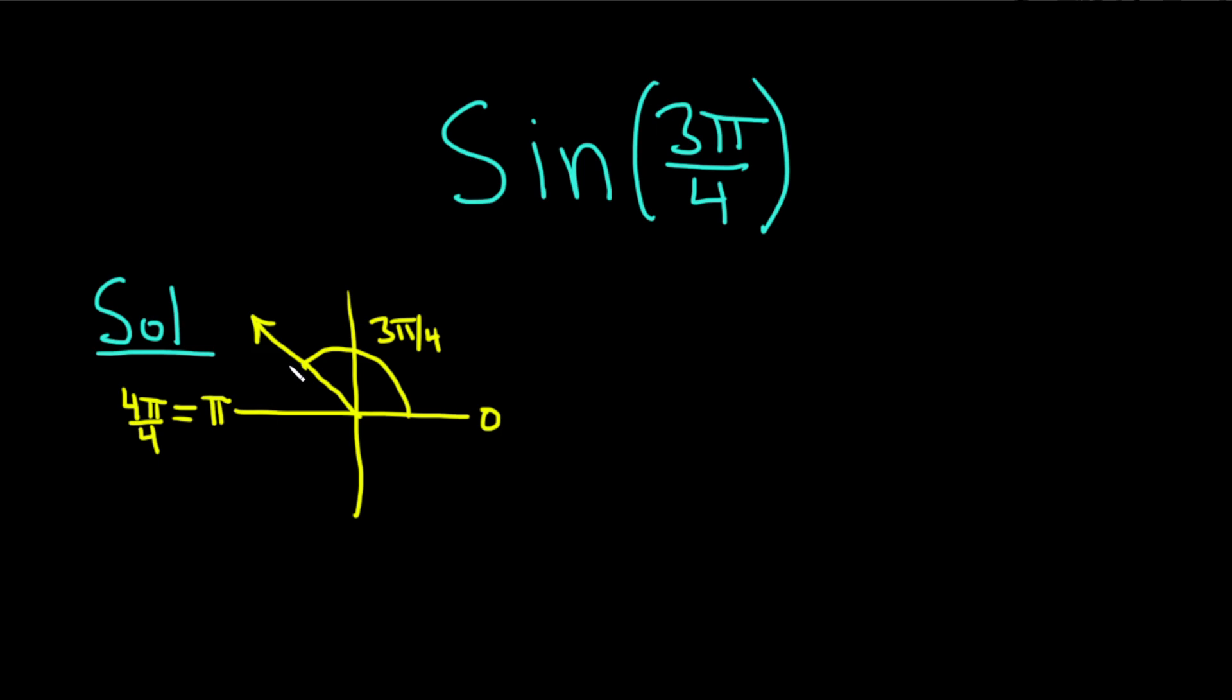So now we can find the reference angle. That is the positive angle made with the terminal side of our angle and the x-axis. So that would be this angle here in white. And this angle, you can see, is going to be pi over 4.